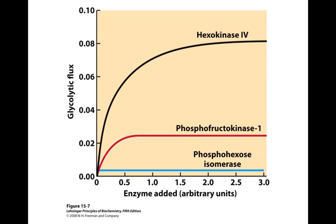The enzymes primed for regulation that we're going to talk about first are hexokinase and phosphofructokinase. We're not going to really talk about the isomerase, but these two particular ones are appropriate targets for glycolysis regulation because they're at the irreversible steps.